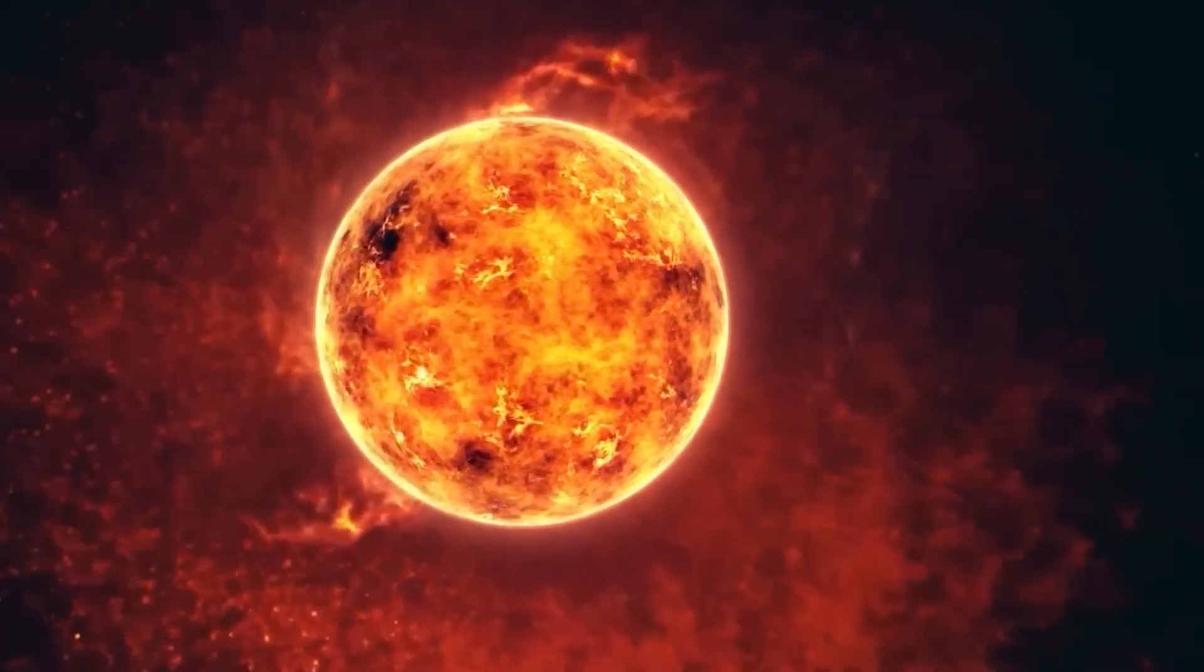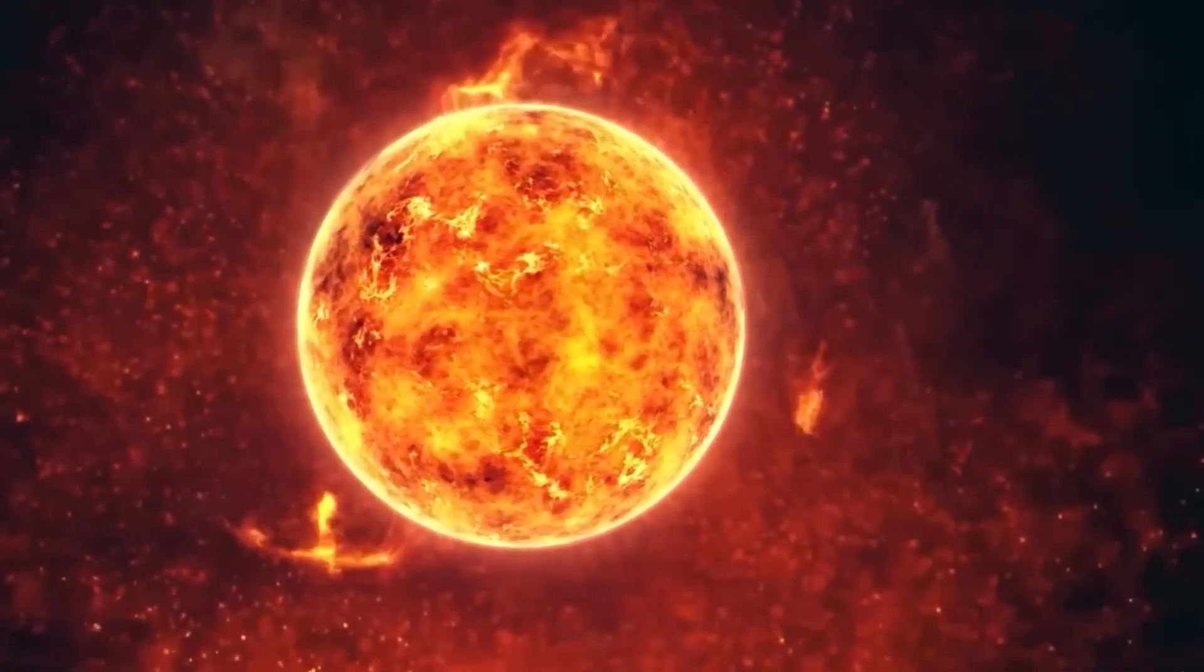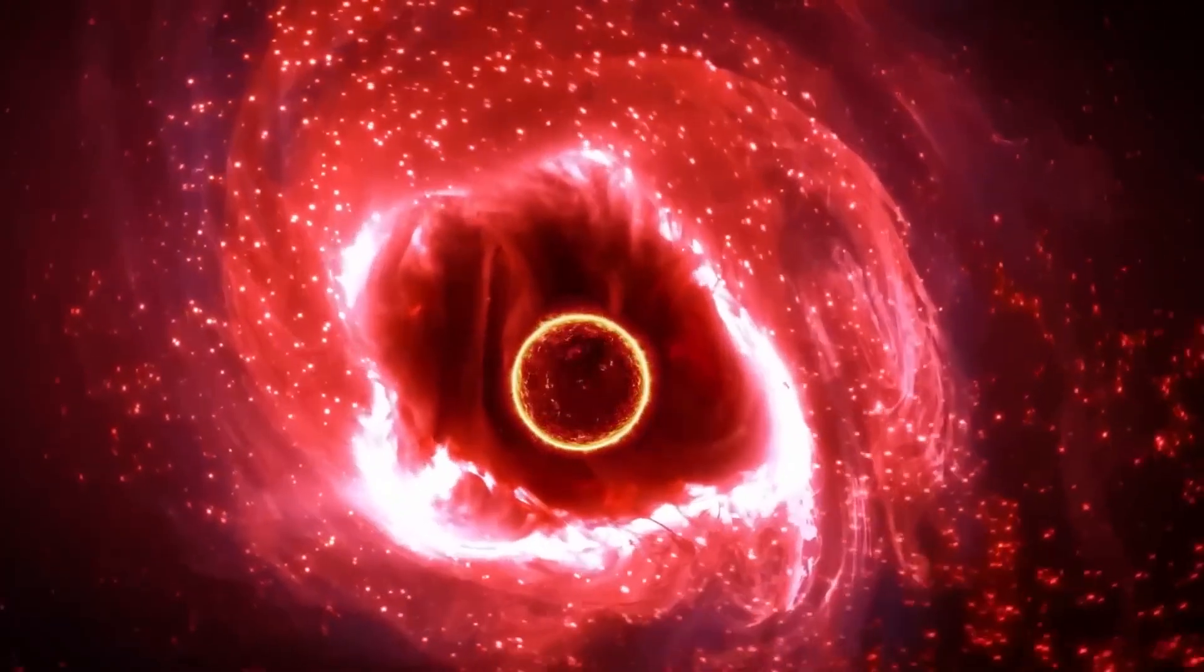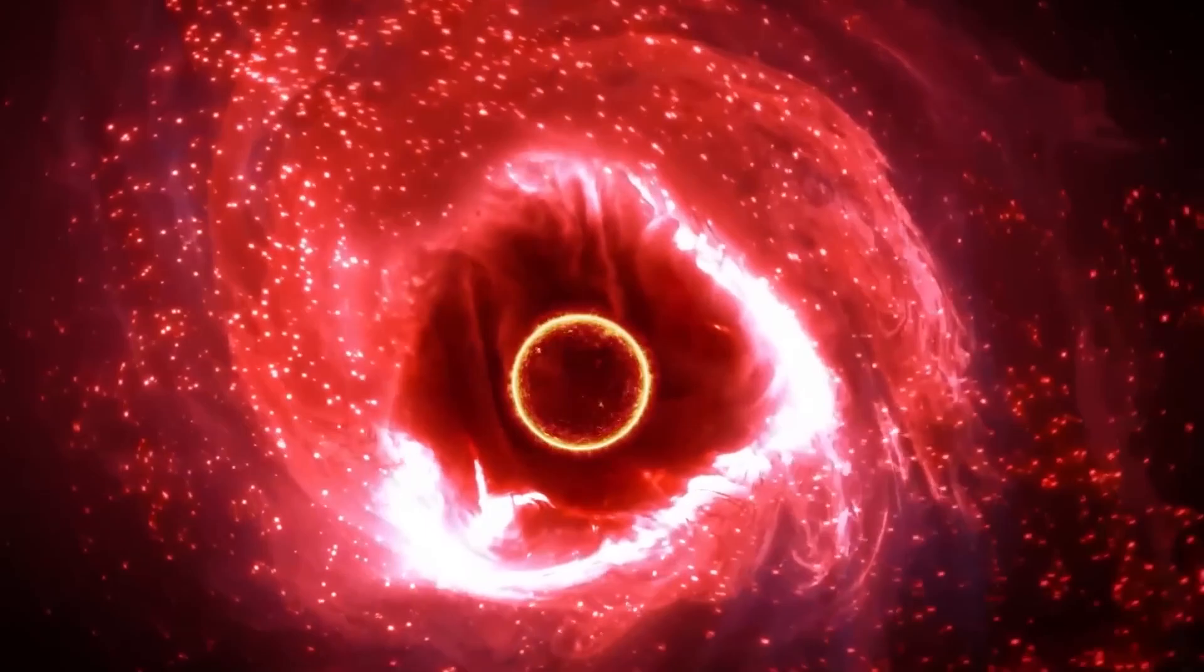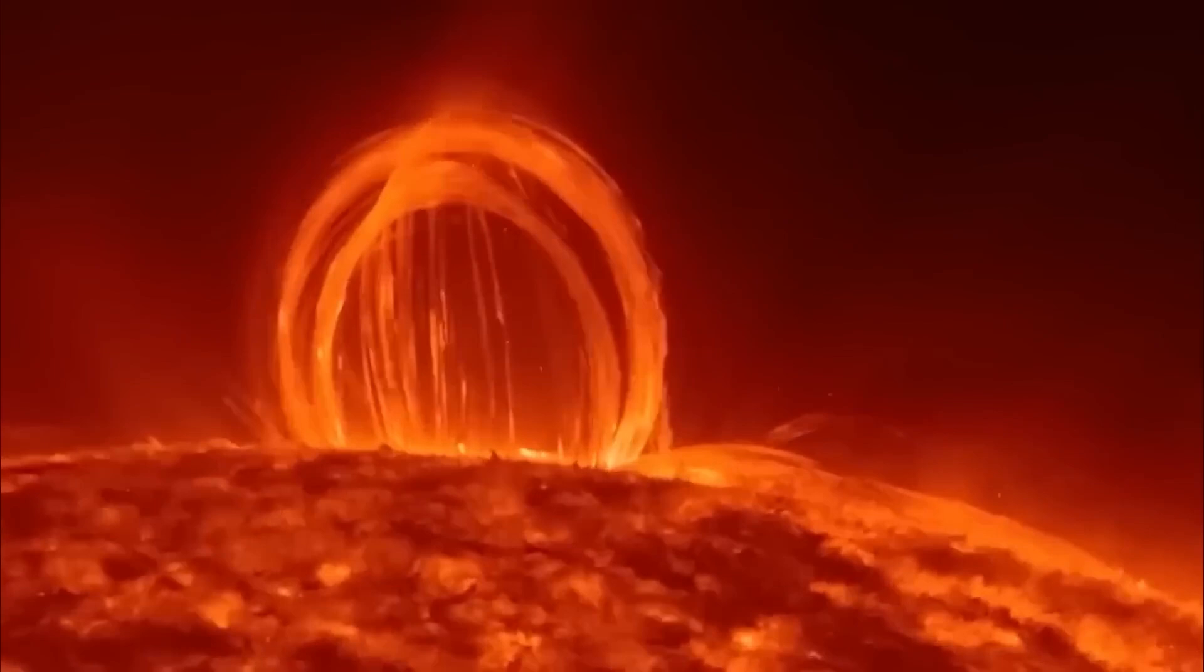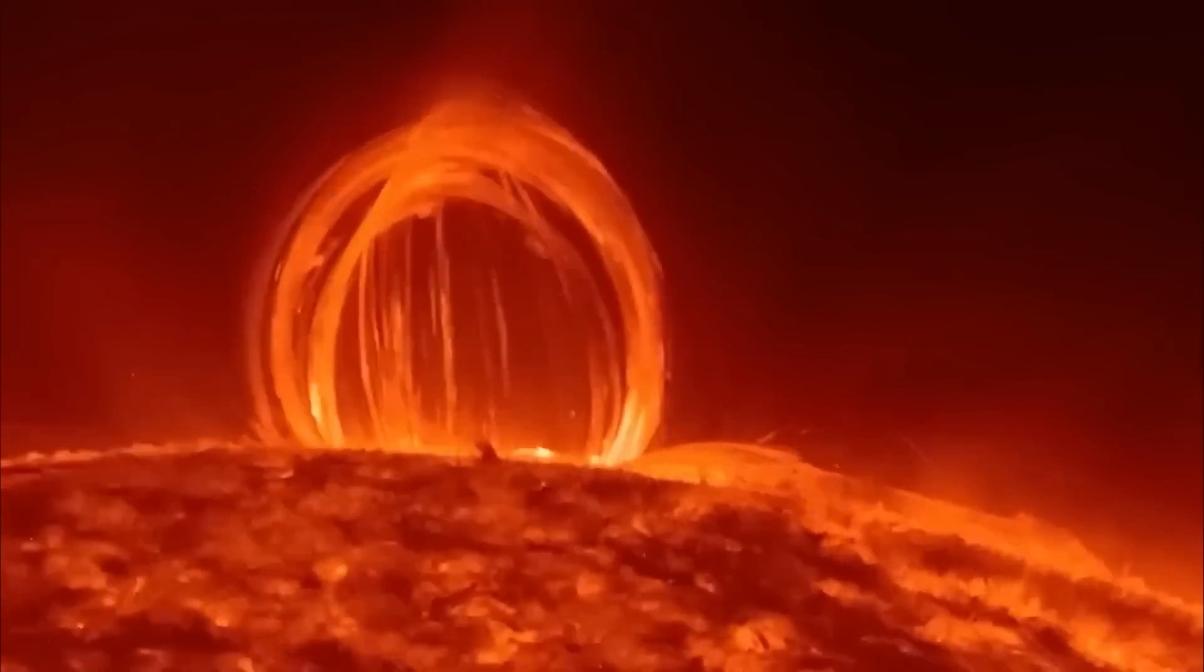Although the Sun is smaller than Betelgeuse, the latter emits less energy per unit area due to its lower temperature, which makes it appear less luminous. Despite being one of the largest known stars, Betelgeuse has been relatively stable, despite being a pulsating giant.